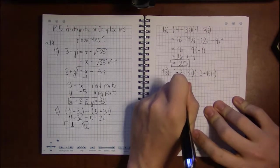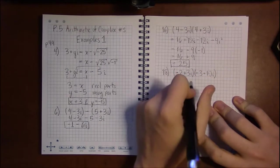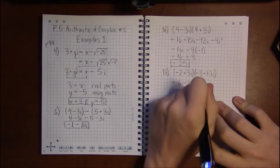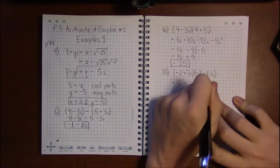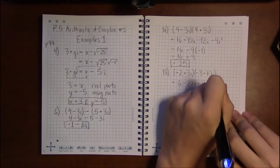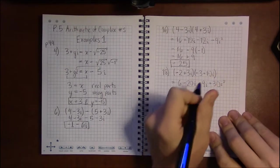Minus 2 times minus 3 is 6. Minus 2 times 10i is minus 20i. 3i times minus 3 is minus 9i. 3i times 10i is 30 i squared.